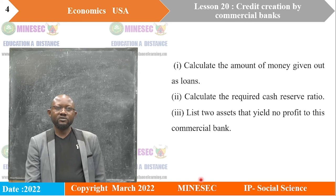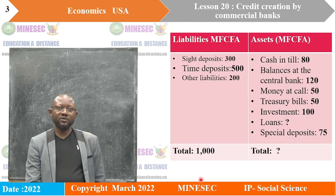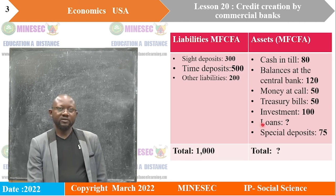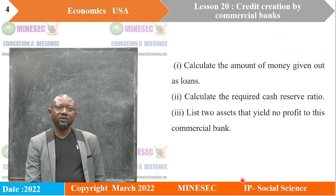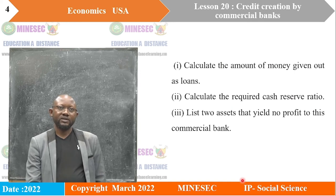These are the questions. First, calculate the amount of money given out as loans. Remember, we go to our table — loans are there, but the amount is not given, so we need to calculate it. Next, calculate the required cash reserve ratio. And finally, list two assets that yield no profit to this commercial bank.